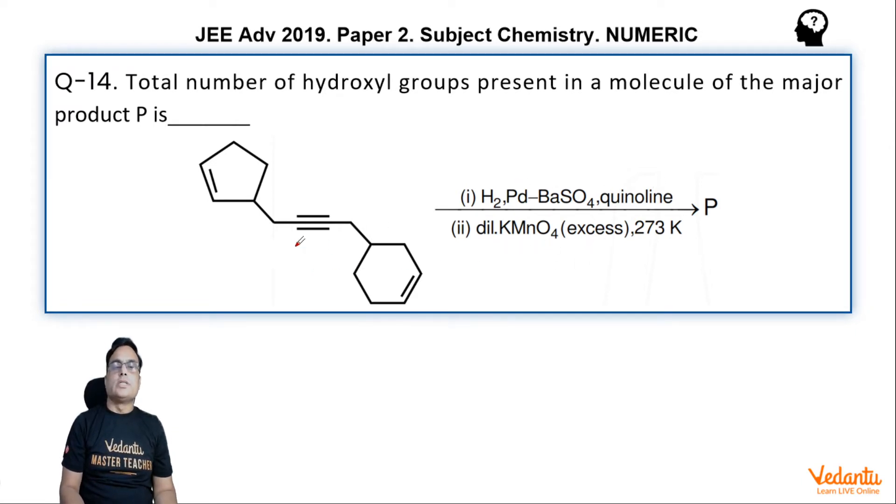Lindlar catalyst will convert this compound, this triple bond, into cis. So this triple bond converts into cis alkene. Now this is having one CH2 with a ring here, right?